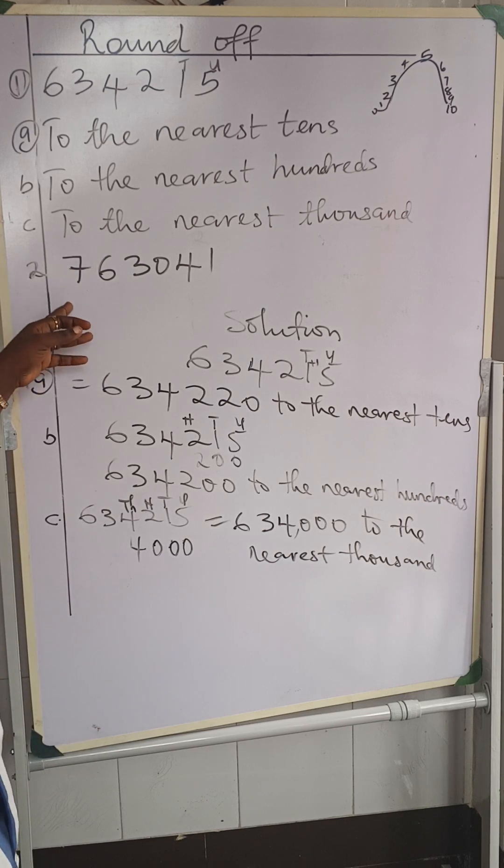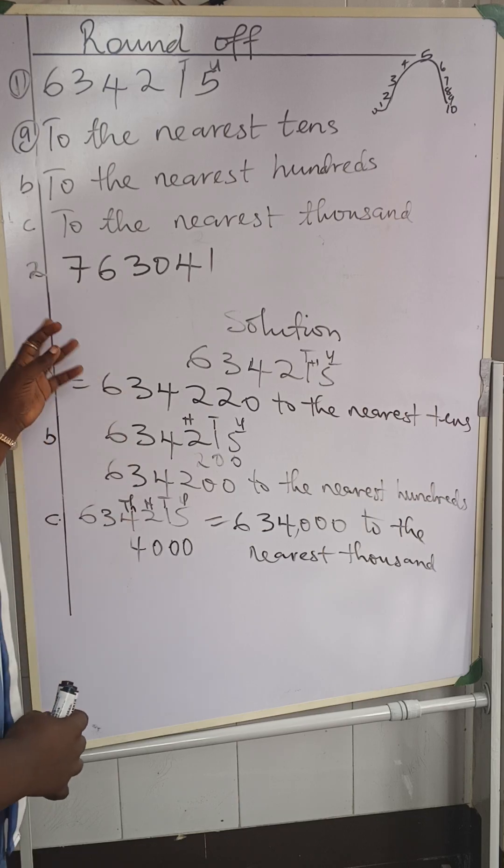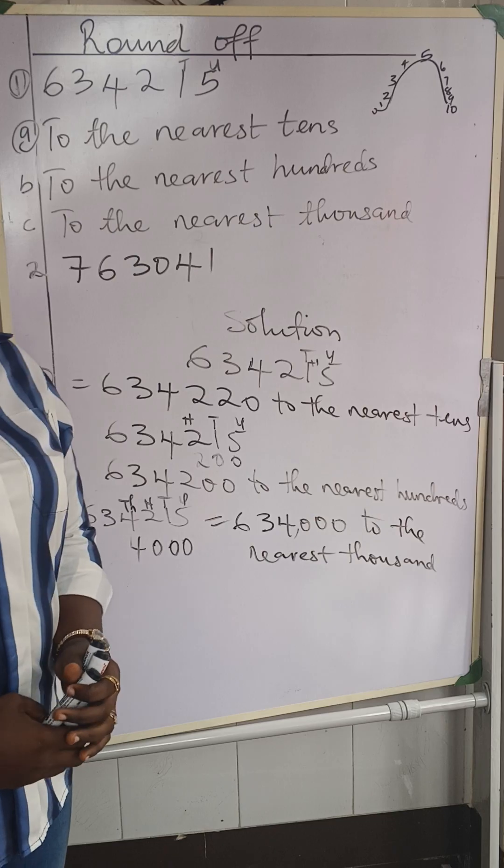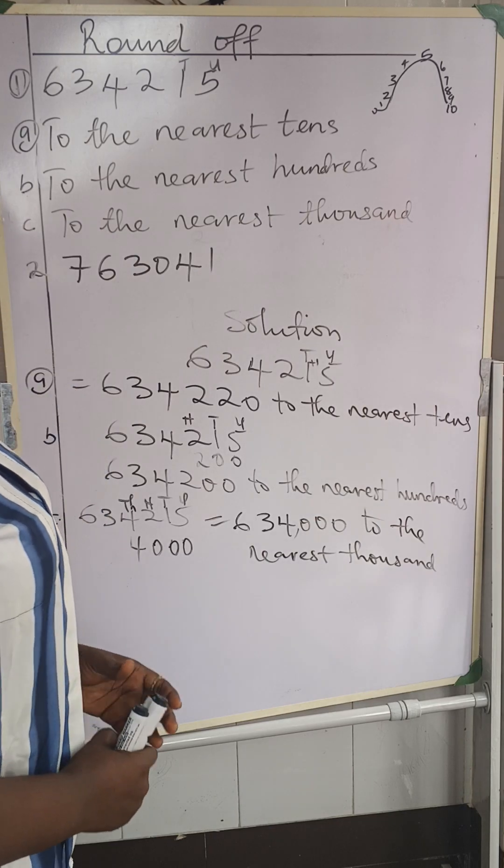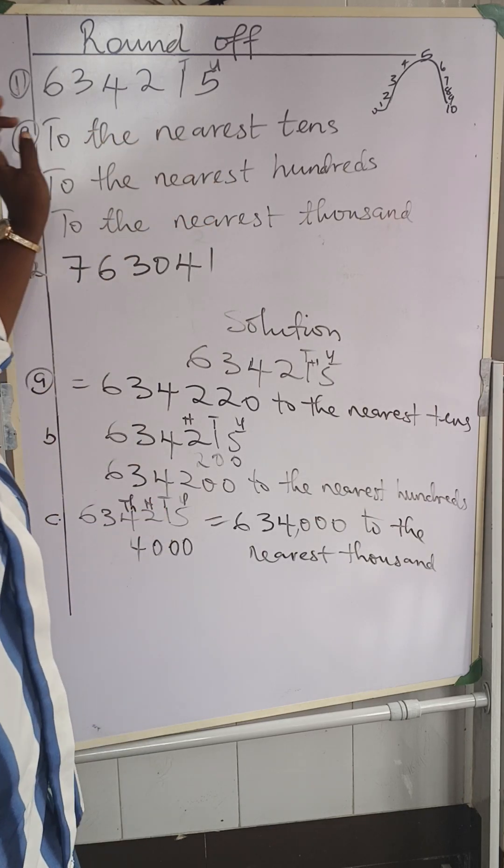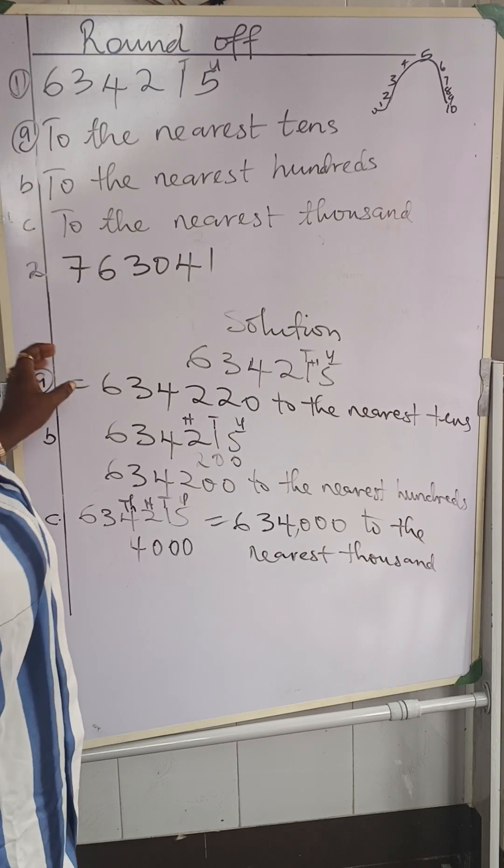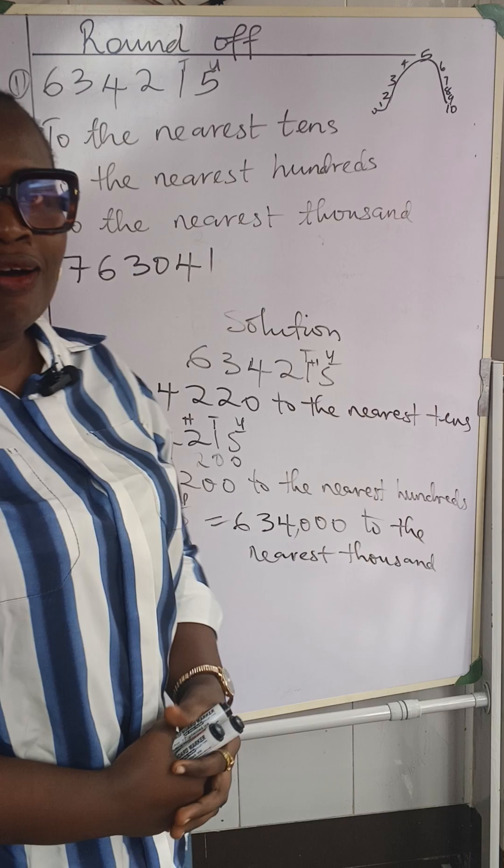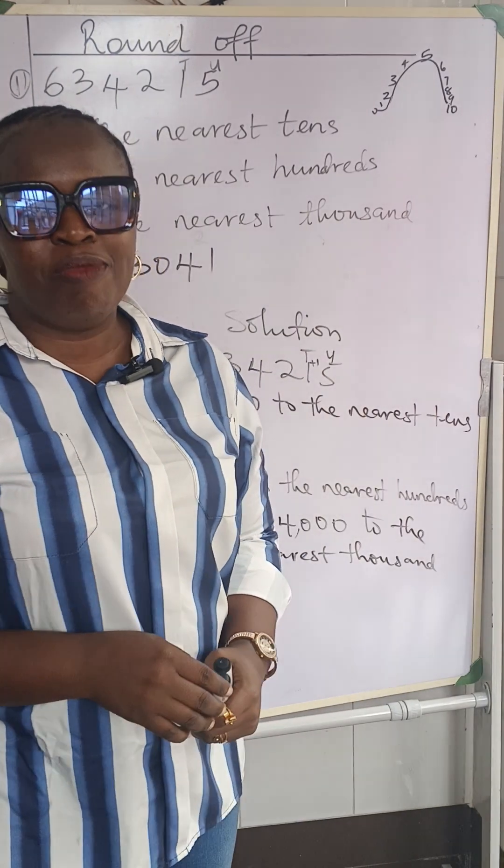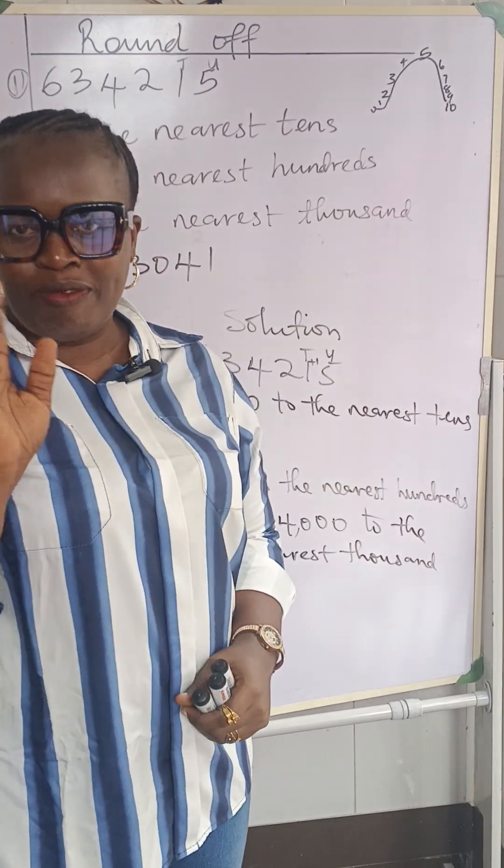Number 2 is 763,041. Please, you're going to give me to the nearest tens. That's A, nearest hundreds, and to the nearest thousand. Use the same format. I want to see the answer in the comments. I will be in the comments waiting for you. Bye-bye.